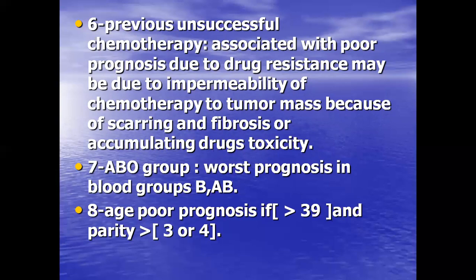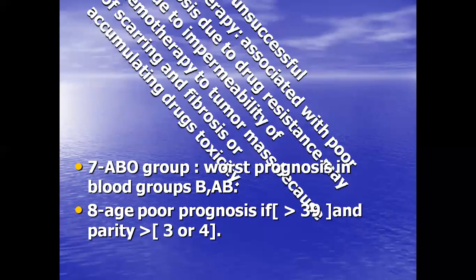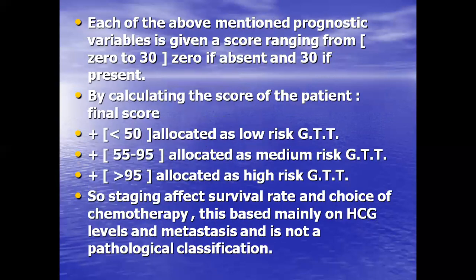Age is another factor — poor prognosis if age is greater than 39. Each of the above-mentioned prognostic variables is given a score ranging from 0 to 3: 0 if absent and 3 if present. By calculating the patient's final score, less than 50 is allocated as low risk, 55 to 95 as medium risk gestational trophoblastic tumor.